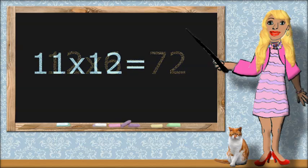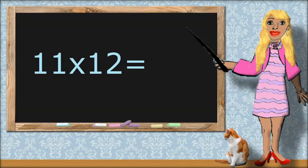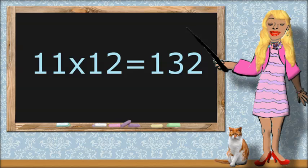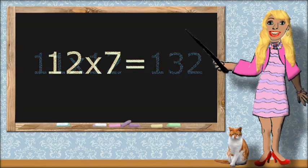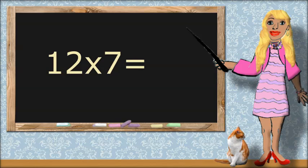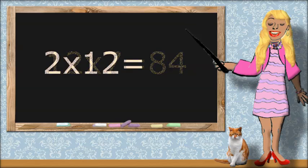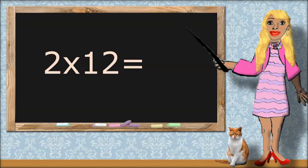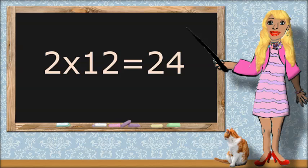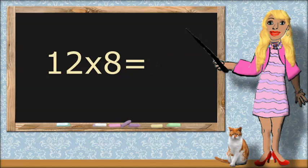11 times 12 equals 132. 12 times 7 equals 84. 12 times 8 equals 96.